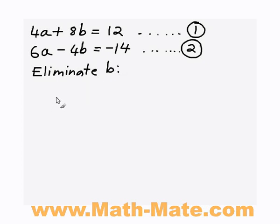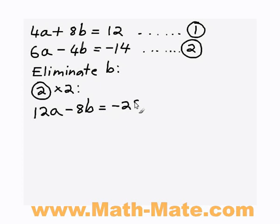So how do I get negative 8b from negative 4b? Well, it's fairly easy. What I need to do is multiply equation 2 by 2. So instead of 6a, I'll have 12a. Instead of negative 4b, I'll have negative 8b. And don't forget to multiply both sides, so instead of negative 14, I'll have negative 28. So now I have a negative 8b in this equation, which I'm going to call equation 3.